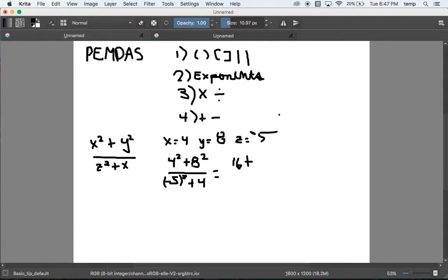Plus 8² - that's 8 times 8, which is 64 - divided by -5². Negative 5 times negative 5, you're multiplying two negatives together so now you have a positive 25, plus 4.